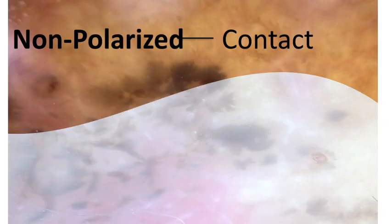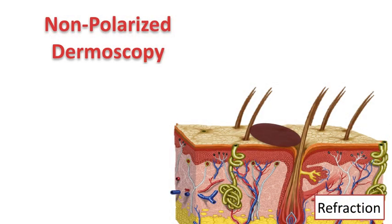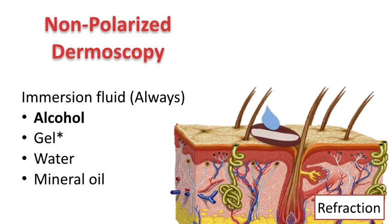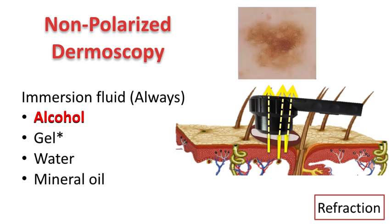Let's see this in more detail, starting with non-polarized contact dermoscopy. Non-polarized dermoscopy is always performed in the contact mode, which means that we require direct contact between the scope and the skin, and we always require a liquid interface or immersion fluid. By attaching the glass plate of the dermatoscope to the stratum cornea and using the liquid interface that allows matching the refractive index of the skin and the air, we will be able to decrease the light that is being reflected and instead increase refraction, allowing us to visualize structures below the stratum cornea, like the network.